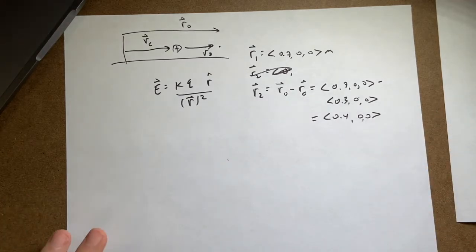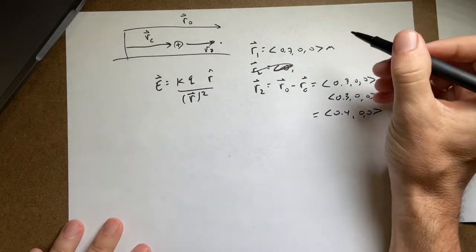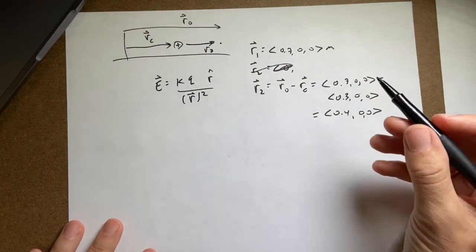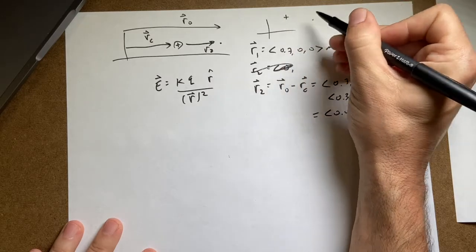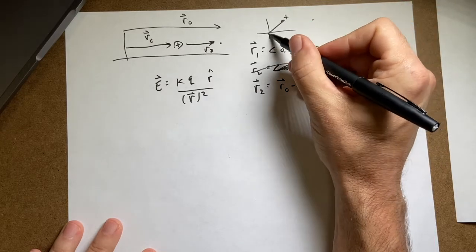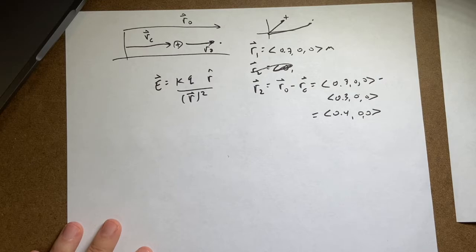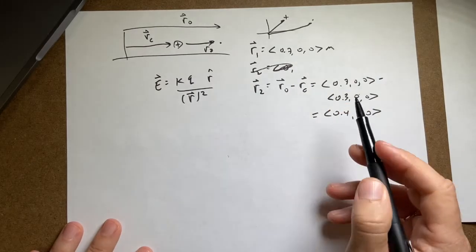And you could have done that just by thinking about it. Okay. And that's cool. The reason I did that the long way, because there are some cases where you can't just think about it. You know, if I had a charge up here and the electric field right there, I'd have to have that vector and that vector, and it's not so obvious. Okay. So I have my two vectors.